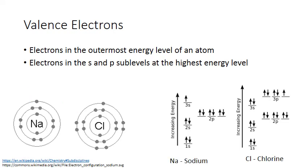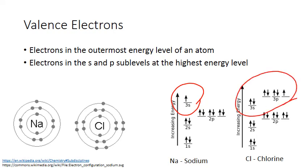For sodium, the highest energy level is the third energy level, and it has one electron in that energy level in the S sublevel. Chlorine has seven valence electrons in the third energy level, and they're split between the S and the P sublevels.